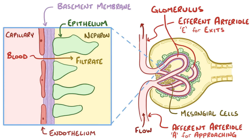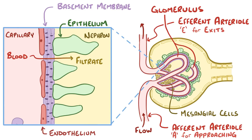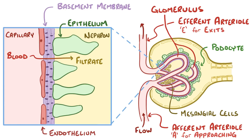The endothelium has pores that keep cells from entering the filtrate, and the basement membrane is negatively charged and repels other negatively charged molecules and proteins, like albumin. Furthermore, the epithelium has a special cell type called a podocyte, which looks like an octopus because it has foot processes that wrap around the basement membrane, leaving tiny gaps called filtration slits.